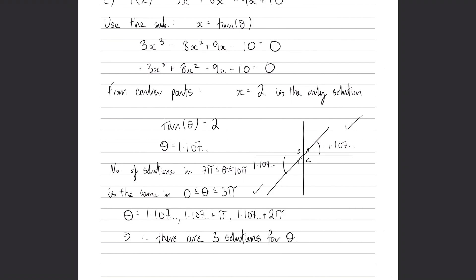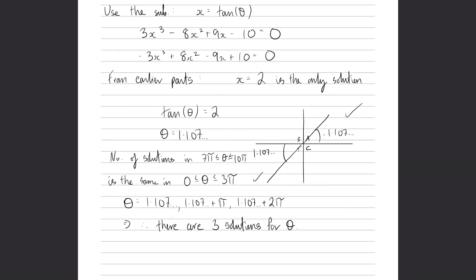And that's it for the question. In terms of the marking, you'll get one mark for proving that there are three solutions for theta. That's just one mark for this part.